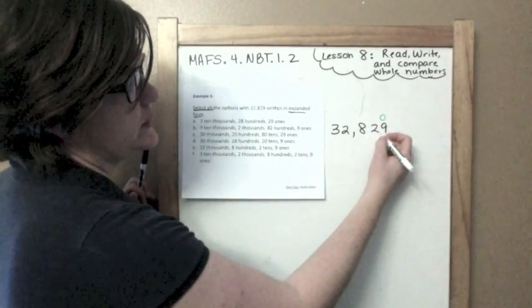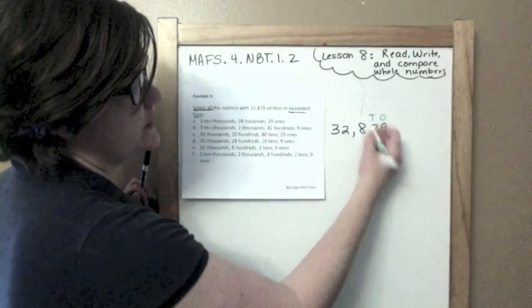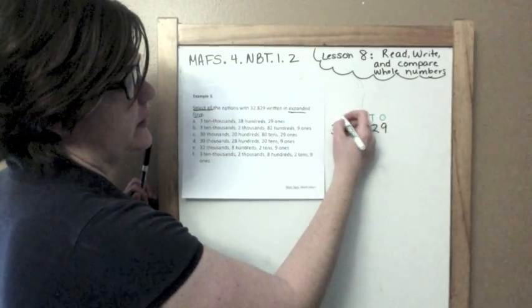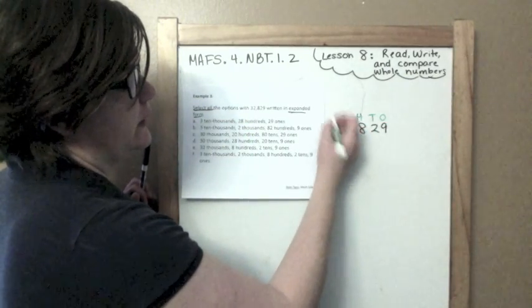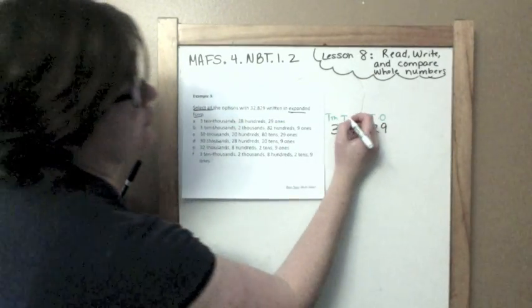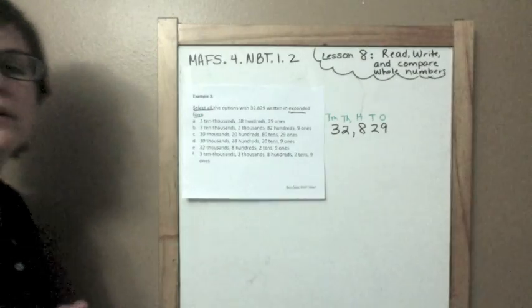Thirty-two thousand eight hundred twenty-nine. Okay. Before we start, we're going to need to know a little bit of stuff. So, this is the ones place. The 2 is in the tens place. The 8 is in the hundreds place. The 2 is in the thousands place. And the 3 is in the tens thousands place.